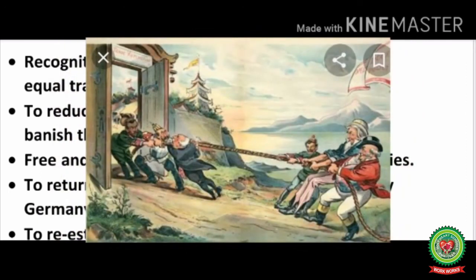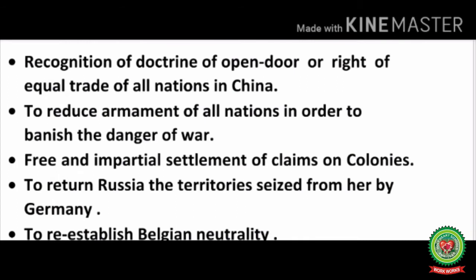The 14 Points included: recognition of the doctrine of the open door and equal trade rights for all nations in China; reduction of armaments of all nations to banish the danger of war; free and impartial settlement of colonial claims; returning to Russia territories seized by Germany; and re-establishing Belgian neutrality. Wilson declared that all nations should have equal right to trade in China, armament races should be reduced, colonial claims settled peacefully, Russia should recover German-conquered territories, and Belgium should be given freedom and its neutrality maintained.